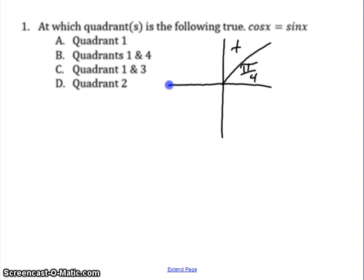In quadrant 2, sine is positive but cosine is negative. But in quadrant 3, both sine and cosine are both negative.